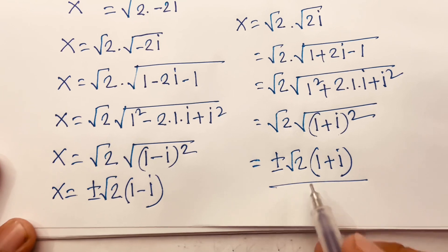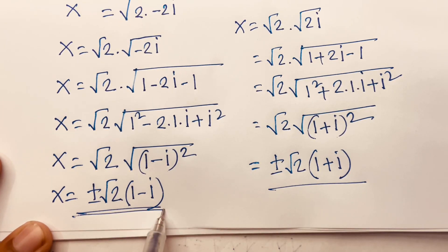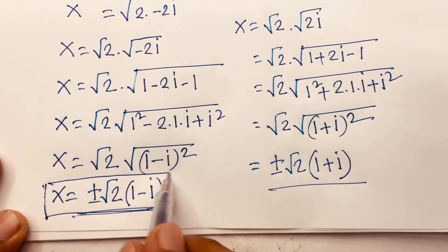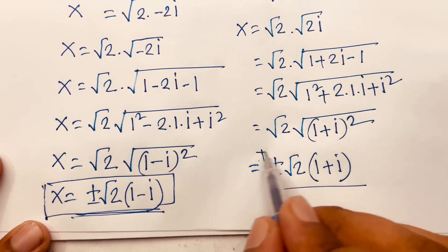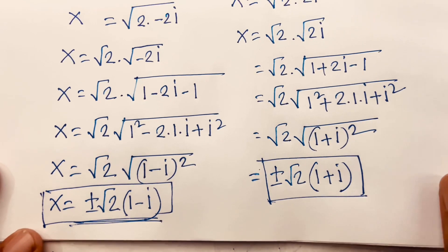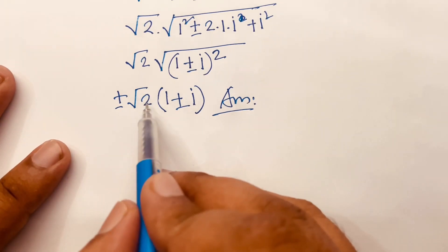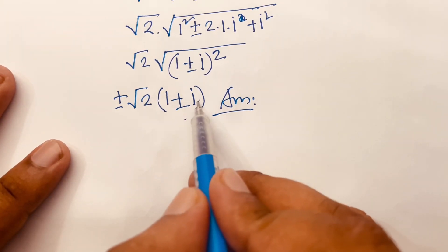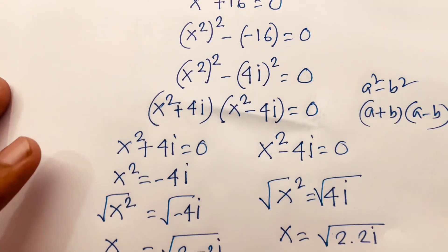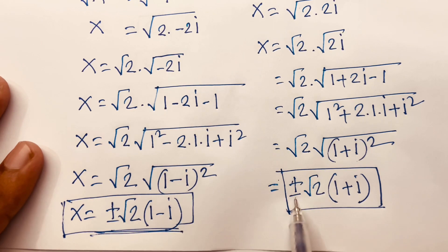So we have two results with ± each, giving four answers in total: x = ±√2(1 - i) and x = ±√2(1 + i), which can be written as x = ±√2(1 ± i). This gives 4 answers overall.